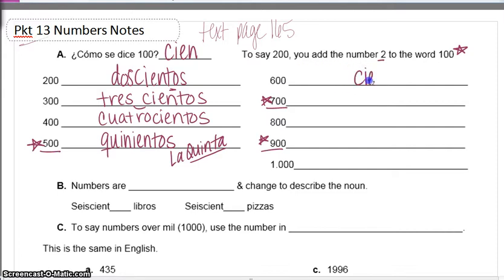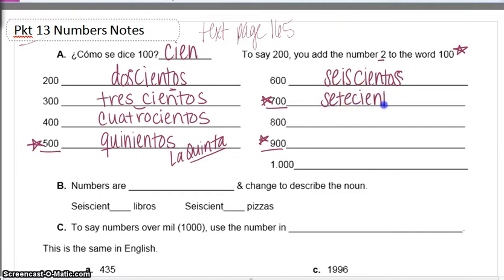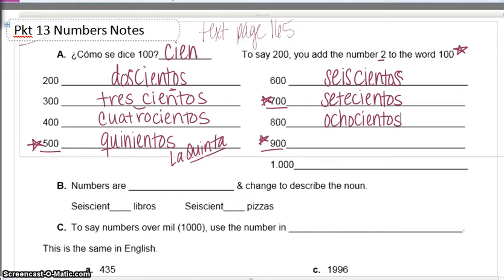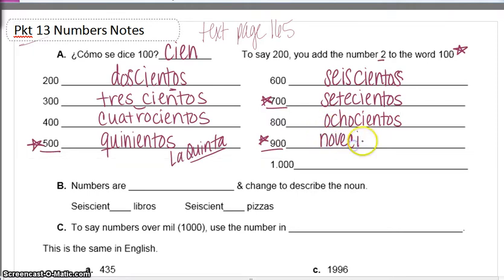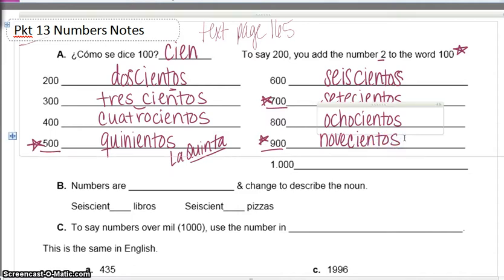Six follows the pattern — you start with -cientos and add seis: seiscientos. Seven doesn't follow the pattern. You're not going to say siete cientos — there are too many repeated sounds. So it ends with -cientos, but you drop the I: setecientos. Eight hundred is normal: ochocientos. Nine hundred doesn't follow the pattern — it's too many syllables, so they simplify it to novecientos. For five, seven, and nine, you're dropping vowels to make it easier to say.